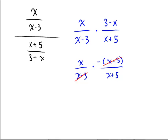And so your final answer on this one's going to be the negative of the x over x plus 5, or again, for politeness' sake, oftentimes we'll write this as negative x over x plus 5 out in front.